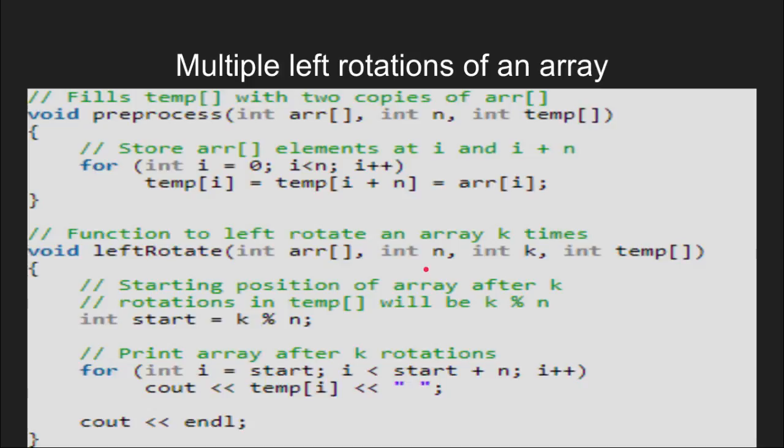Here is a simple C implementation of the approach we are trying to follow. We will fill the temporary array with two copies of the original array whose multiple left rotations have to be found, storing elements at i and i plus n. This is the preprocessing step.